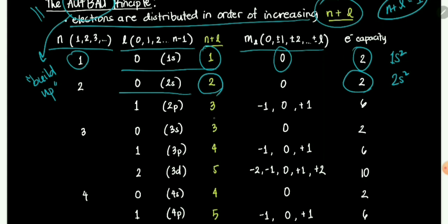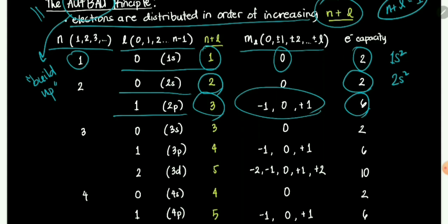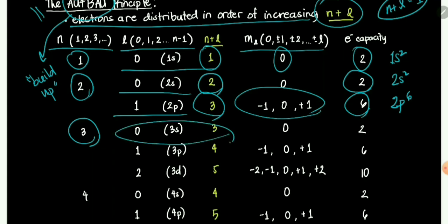Then we have 2p. 2p has an n plus l equals 3, and we can put a maximum of 6 electrons because of the 3 magnetic quantum numbers. So we have 2p6. For n equals 3, by the way, 2p is n equals 2. So for n equals 3, we have 3s, which also has n plus l equals 3. Mauuna yung 2p kaysa sa 3s kasi mas mataas yung n ng 3s kahit pareho sila ng n plus l. Kapag pareho sila ng n plus l, mauuna yung subshell na mas mababa ang n. For 3s, we can put a maximum of 2 electrons, so 3s2.